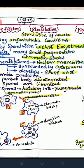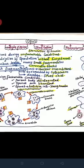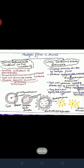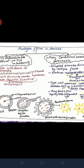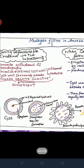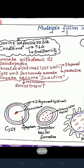We can recall encystation of amoeba under the topic of multiple fission. In multiple fission, amoeba withdraws its pseudopodia and secretes a chitin cyst, which is three-layered and protective. The cyst surrounds the amoeba and the amoeba becomes inactive — this phenomenon is called encystation.